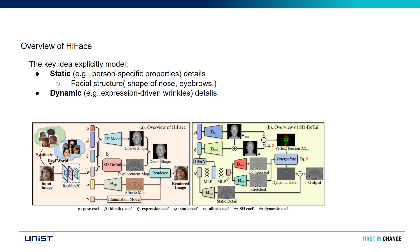The architecture takes an input image combining synthetic and real data. They use a pre-trained ResNet-50 to extract key features and extract around six coefficient parameters: pose, identity, expression, static albedo, and dynamic coefficients. They also use a 3DMA model that takes in pose, expression, and identity. With the combination of dynamic and static inputs, they render the final output image using the 3D model.